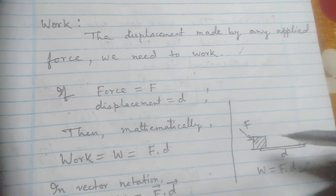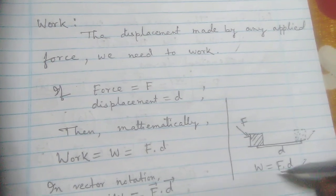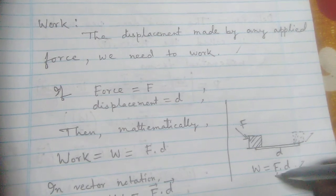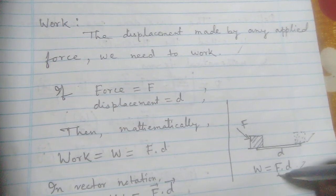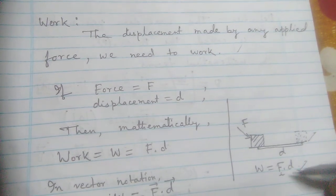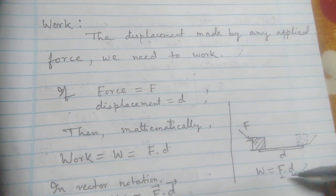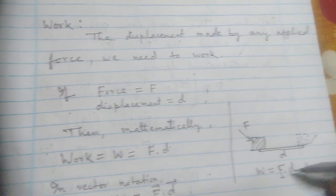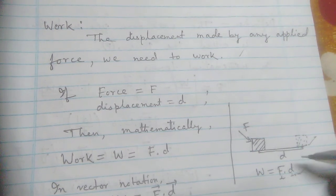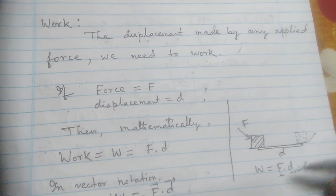calculate. First we have to know that F is a vector quantity and d is also a vector quantity. But the multiplication is vector multiplication. Vector multiplication always has two types: